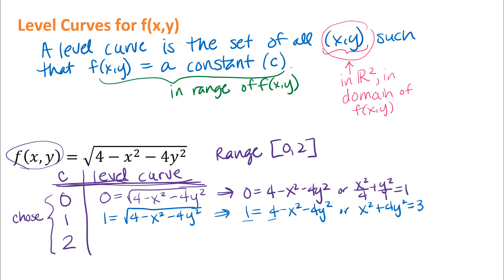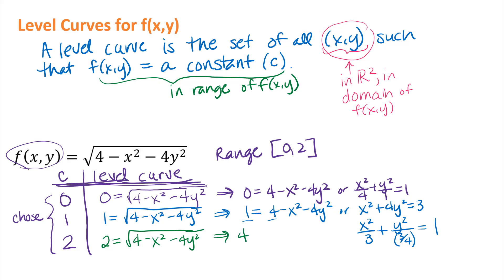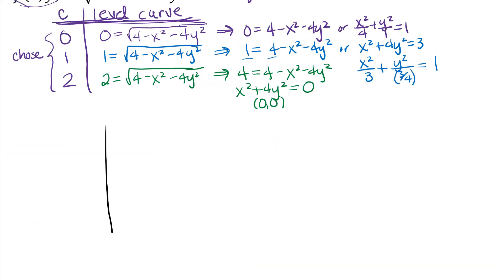I'll square both sides and rearrange terms. When I add x squared and four y squared to the other side and subtract one, I get x squared plus four y squared equals three. This is also an ellipse, but its dimensions are a little harder to think about. Dividing through by three gives x squared over three plus y squared over three-fourths equals one, which helps us think about how far up and down we go from the center. For c equals two, squaring both sides gives four equals four minus x squared minus four y squared, which rearranges to x squared plus four y squared equals zero — a degenerate ellipse. This gives just the origin.